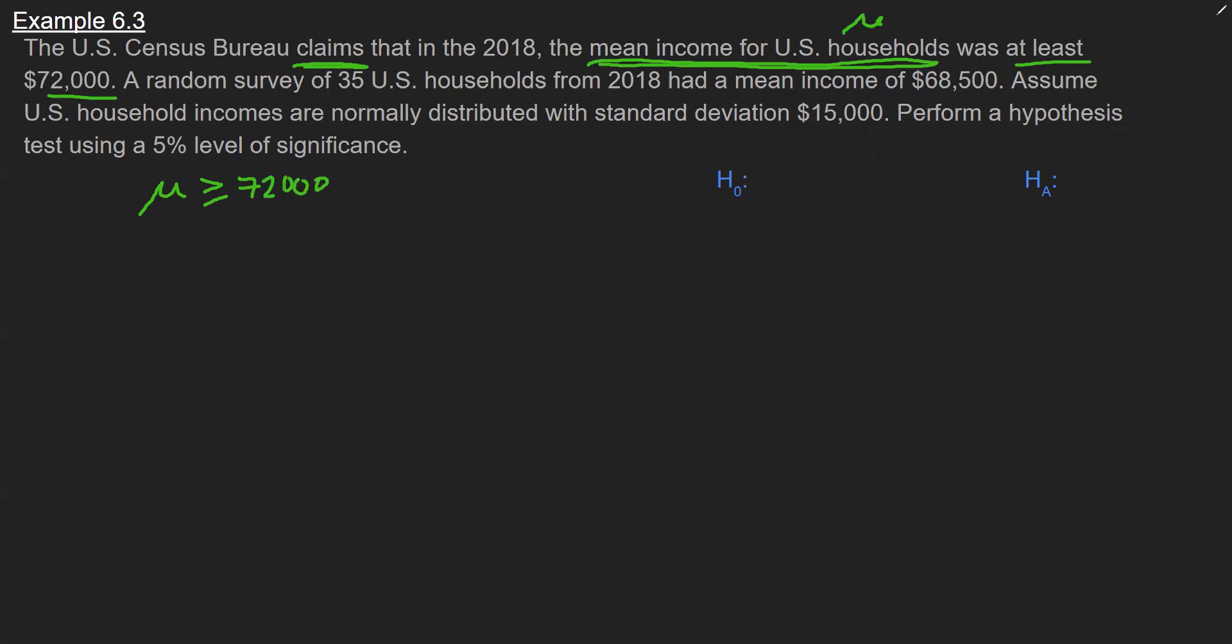And the rule for our class and in general is that if you have an equality symbol, then that goes in the null hypothesis. So now I can just go ahead and translate this over here as my null, greater than or equal to $72,000, and I'm going to report that that is my claim.